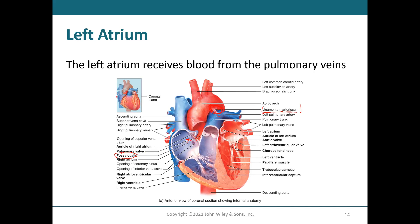There's also the fossa ovalis in the interatrial septum — it had a hole called the foramen ovale, allowing blood to pass between the right and left sides of the heart in utero. Once born, it closes. If there's a septal defect, it has to be fixed — that's what people mean by a baby born with a 'hole in the heart.' The interventricular septum is a big piece of myocardium between the ventricles. The left ventricular chamber is huge compared to the right, with much thicker muscle walls. The left ventricle is like Jimi Hendrix — the rock star of the heart — because it pumps blood to the whole body, whereas the right ventricle just pumps blood to the lungs.